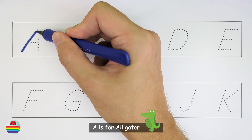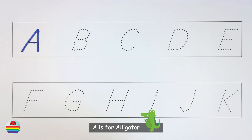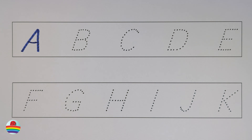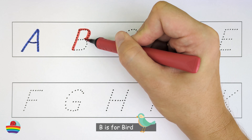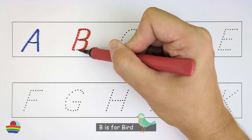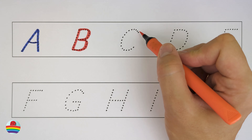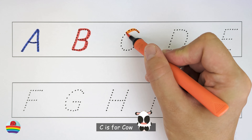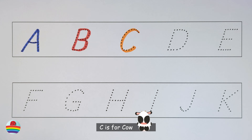A. A is for alligator. A. B. B is for bird. B. C. C is for cow. C.